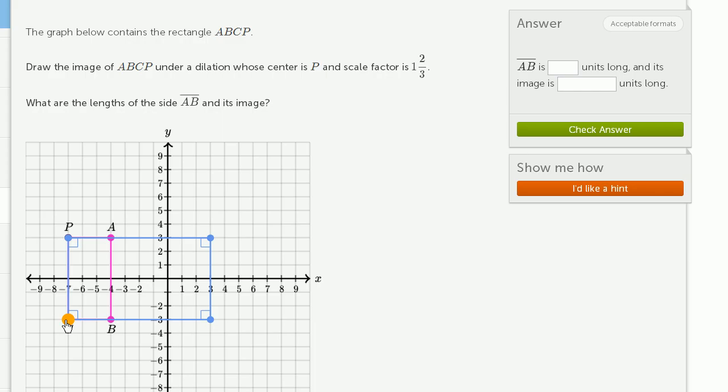Well, 2/3 of 6 is 4, so it's going to be 6 plus 4, or it's going to be 10 away. So 3 minus 10, that gets us to negative 7, so that gets us right over there.